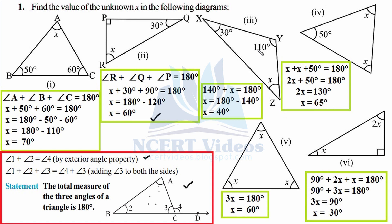In the third part, the unknown is x, which is angle Z. Adding 110 plus 30 gives 140; then x plus 140 equals 180 degrees. Transposing 140 to the right: 180 minus 140 equals 40 degrees. Therefore x equals 40 degrees.